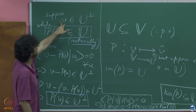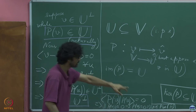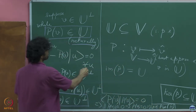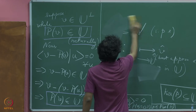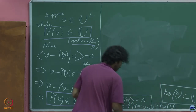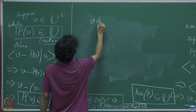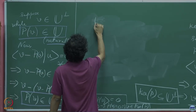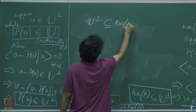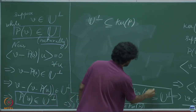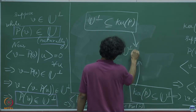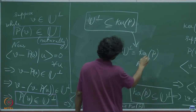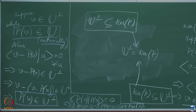So when V starts with the premise that it belongs to the orthogonal complement of U, it ends up being in the kernel of P. This gives us that U⊥ is contained inside the kernel of P. Earlier we had shown the kernel of P is contained inside U⊥. Combining these two, we get U⊥ equals the kernel of P.